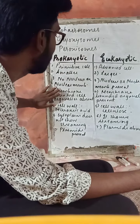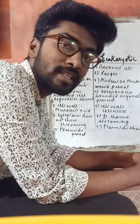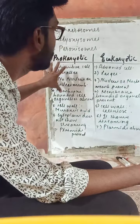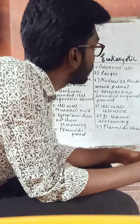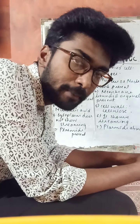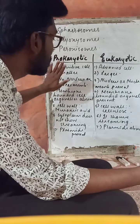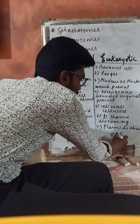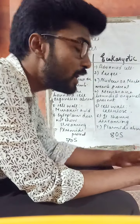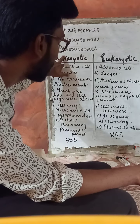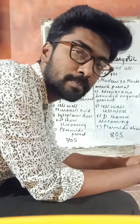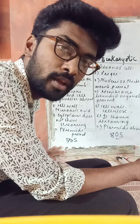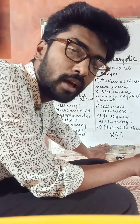Tenth point: the complexity of the prokaryotic cell is less, but the complexity of the eukaryotic cell is high. Eleventh point: 70S type ribosomes are present in prokaryotic cells — with a smaller 30S and larger 50S subunit — while 80S type ribosomes are present in eukaryotic cells, with a smaller 40S and larger 60S subunit.